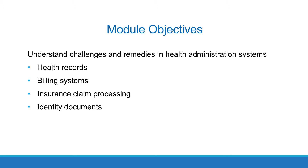Module Objectives. This module describes the challenges and remedies in health administration systems, which revolve around the interfaces between health records, billing systems, and insurance claim processing. At the end of this module, we also describe the role that providers play in helping transgender patients update their identity documents to reflect their gender identities.